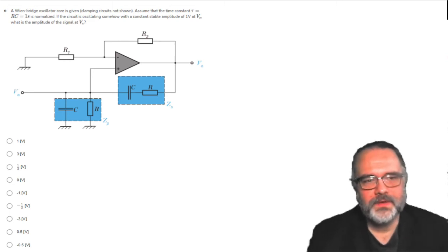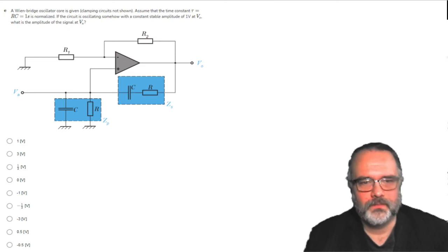A Wein bridge oscillator core is given. Blanking circuits are not shown. Assume that the time constant tau rc equal to 1 second is normalized.